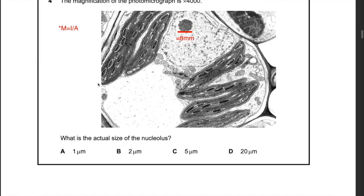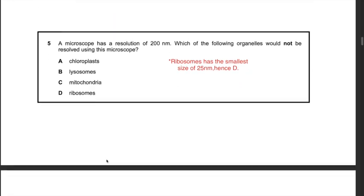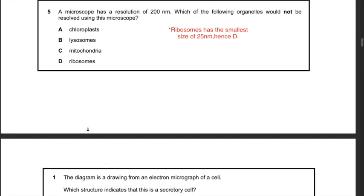Question 6: the magnification of the photomicrograph is 4000. What is the actual size of the nucleolus? The actual image size is 8 millimeters. Since the answers are in micrometers, convert 8 millimeters to 8000 micrometers. Substituting into the formula: magnification = image size ÷ actual size, you get actual size = 8000 ÷ 4000 = 2 micrometers. Hence the answer is B.